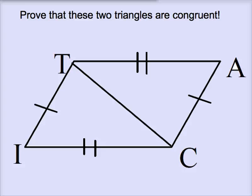So first example is we want to prove that these two triangles are congruent. First off, let's figure out which triangles we're talking about. So let's name them.